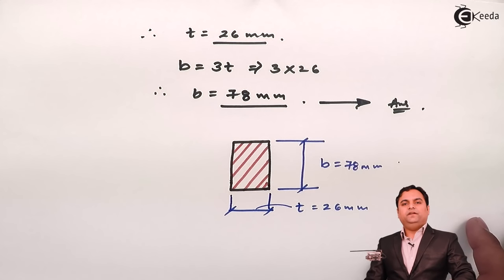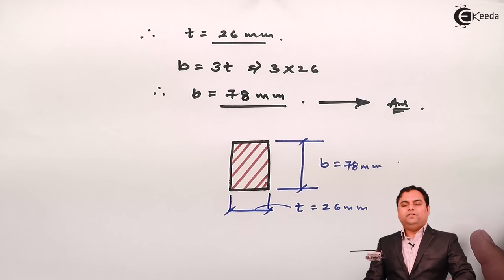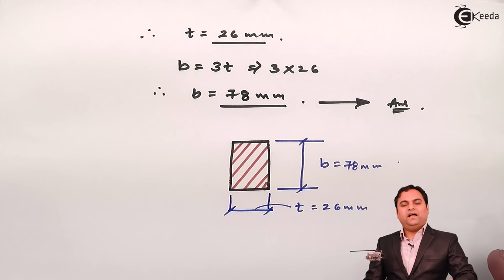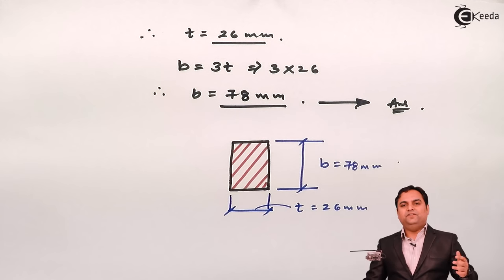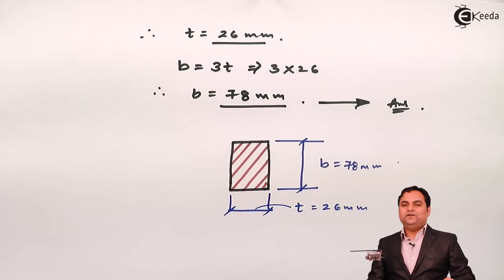In this video we have seen how to design a right angle bell crank lever considering all factors. We designed the fulcrum pin, effort pin, load pin, and lever cross section, completing the full design.